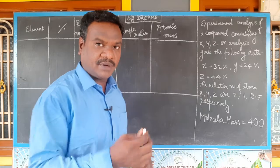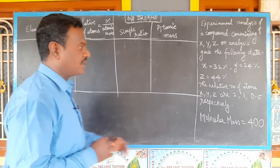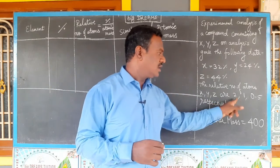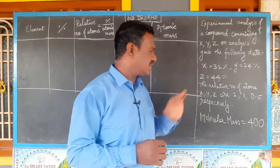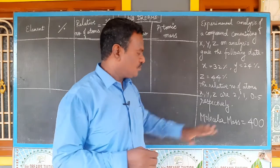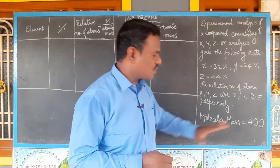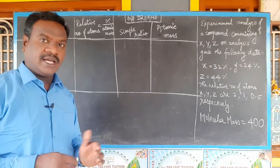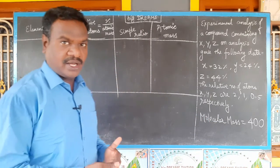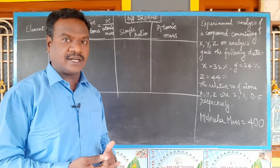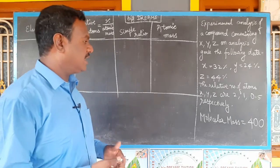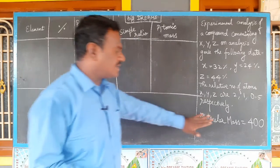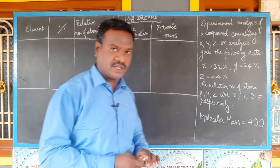Relative number of atoms X, Y, Z are 2, 1, 0.5 respectively. Molecular mass is 400. We will calculate the empirical formula, molecular formula, and atomic mass.